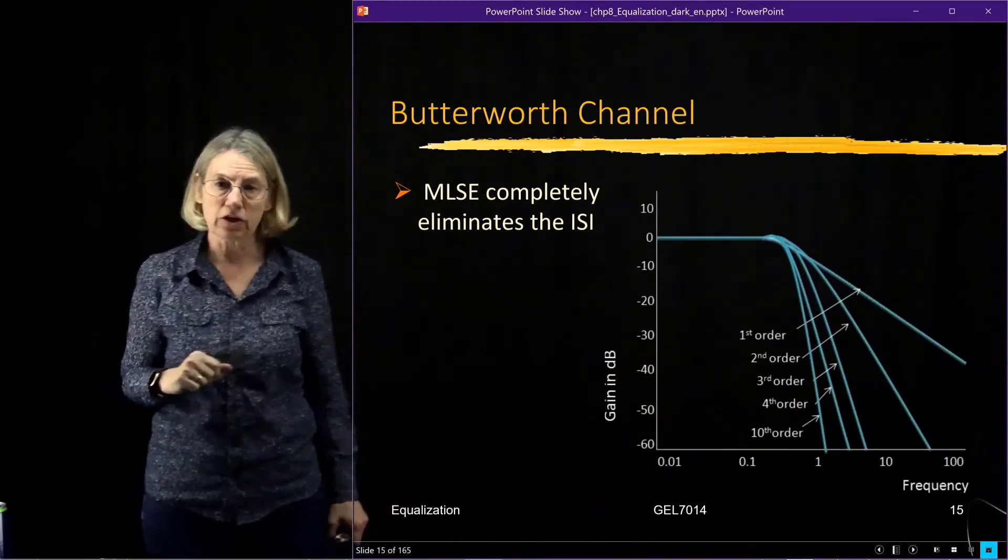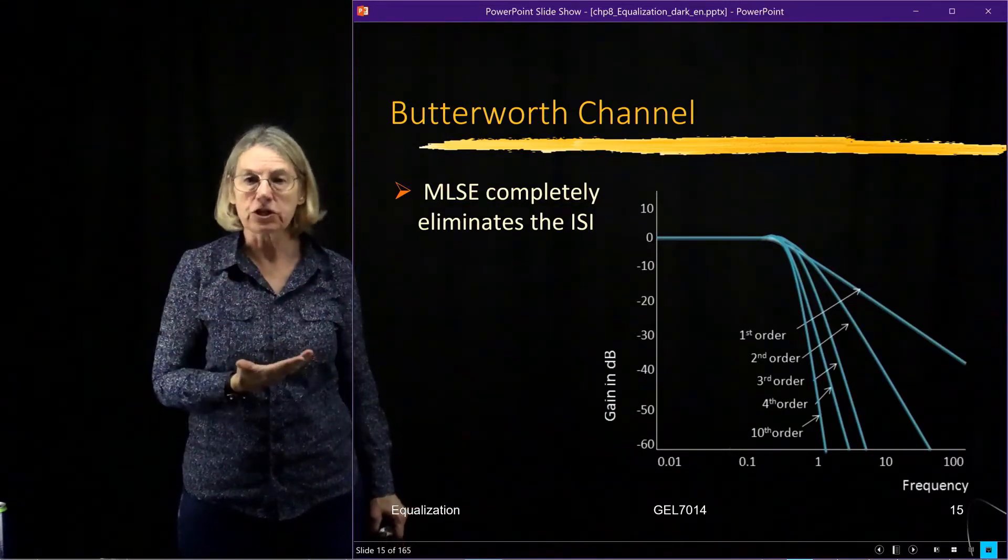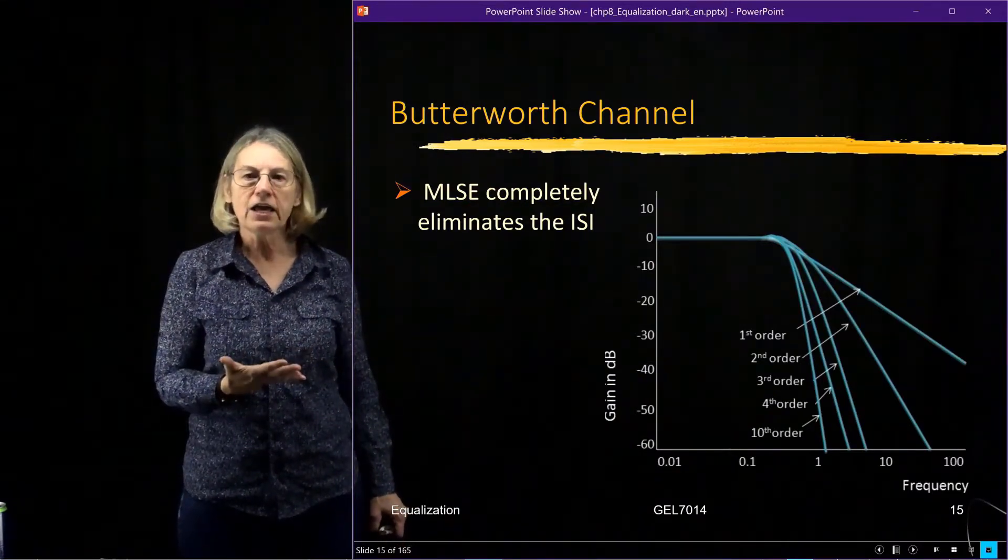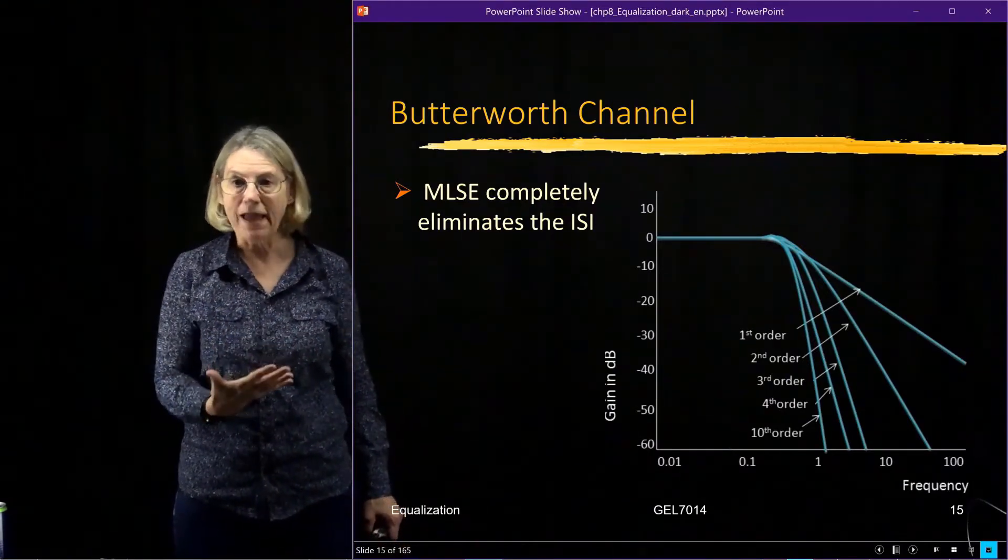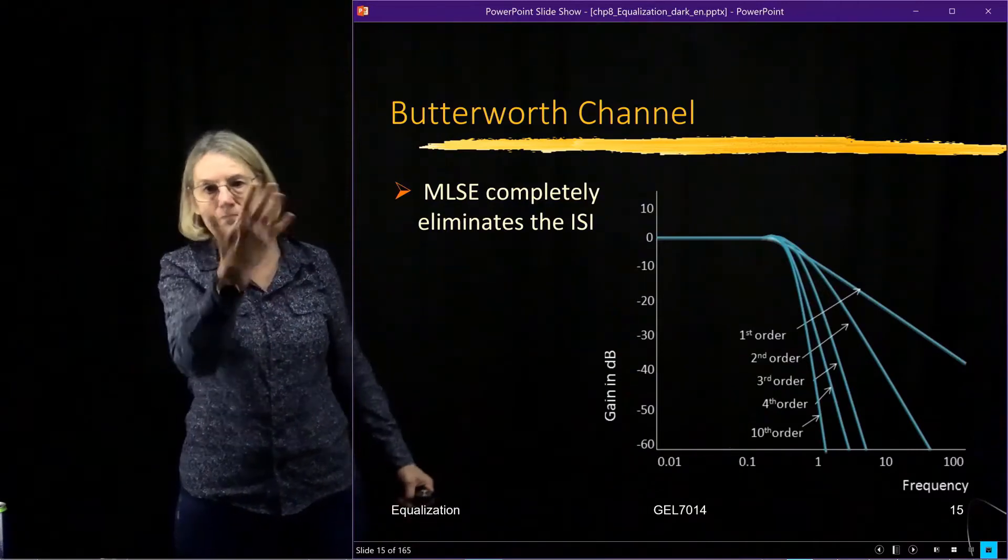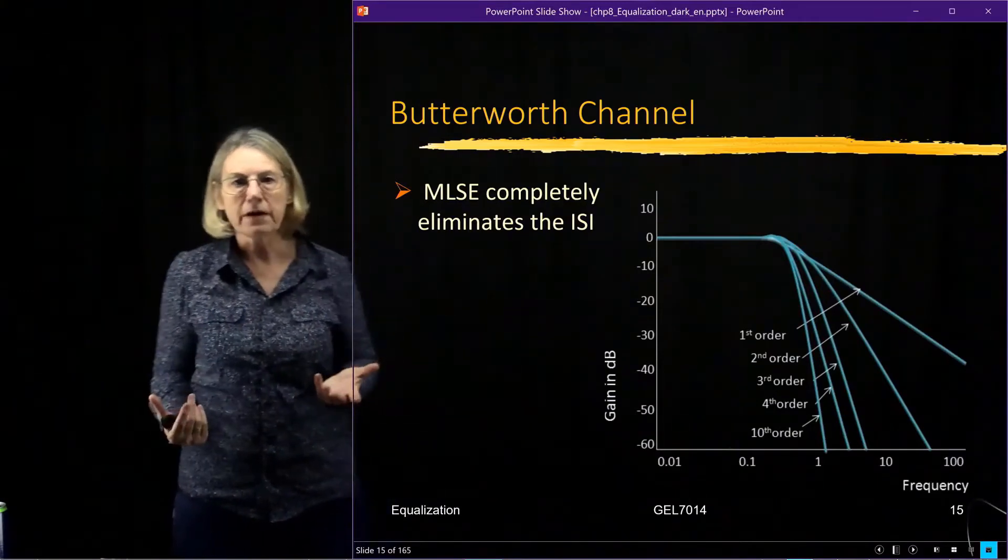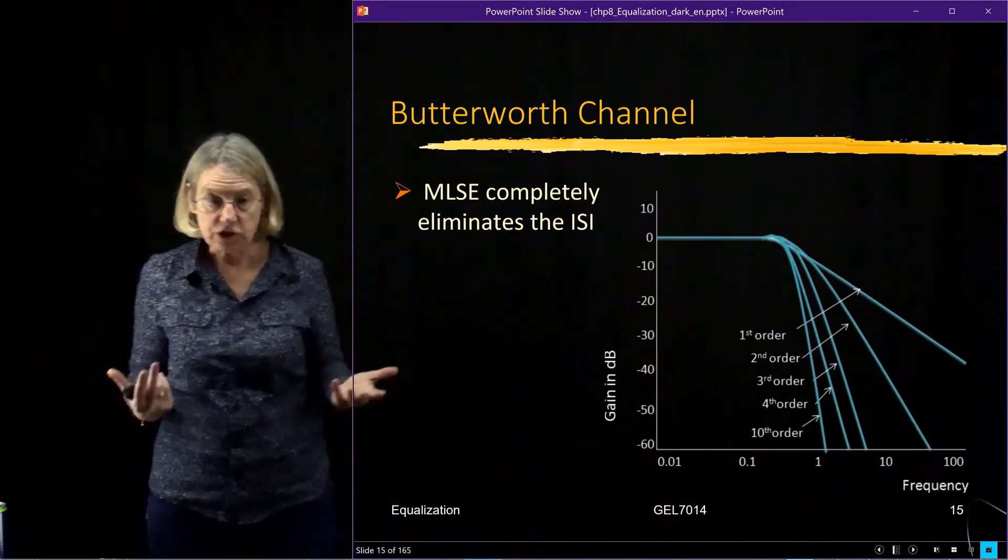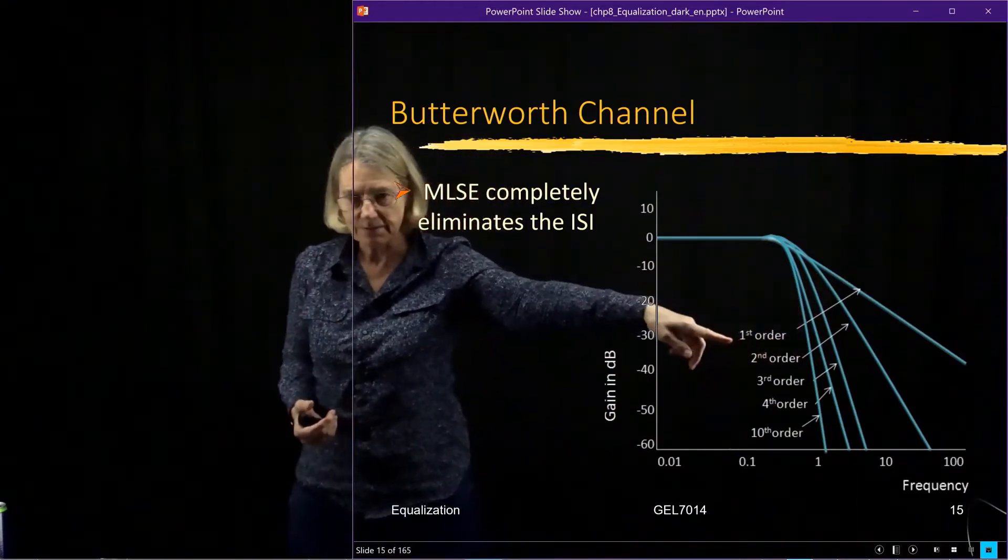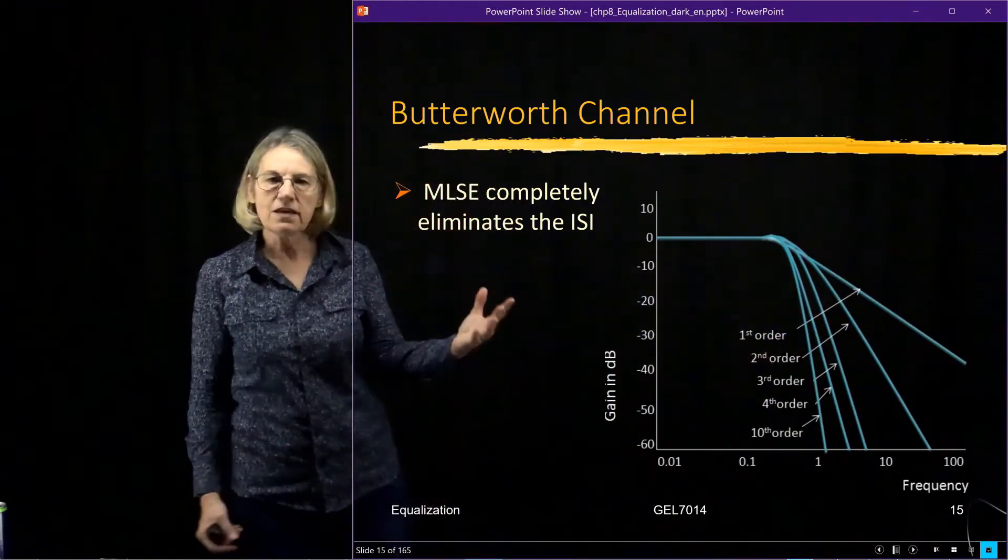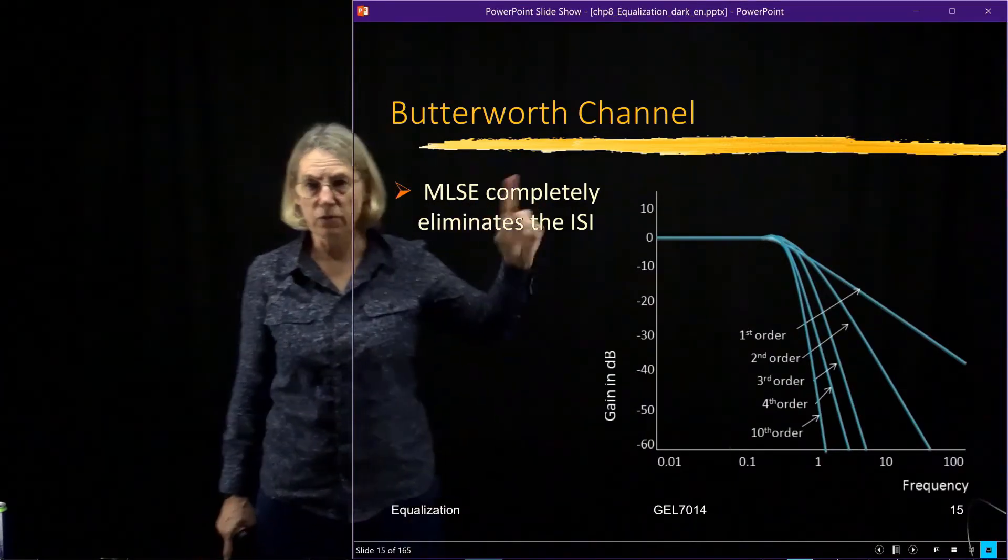So the first thing we could look at is what's known as a Butterworth channel. Butterworth is a kind of filter, and if I were to plot this filter in the frequency response, in the frequency domain, what did this filter look like? I didn't put the equations down, but you can look them up. Well, there's a whole family of Butterworth channels, or Butterworth filters. And depending on the order of those filters, you would get a different kind of frequency response. So you can see that the response is very smooth, very well behaved for the Butterworth channel. There's a very flat portion, and then a gentle roll-off.